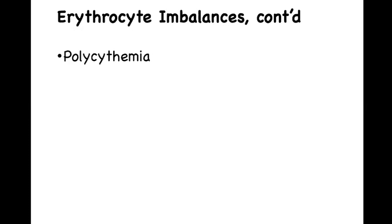Now let's look at what the condition is called when you have too many red blood cells: polycythemia. The hematocrit will be increased, and so will the viscosity. If the blood becomes too thick, it will move too slowly through your vessels, and this can lead to unwanted blood clotting.